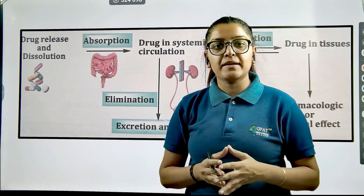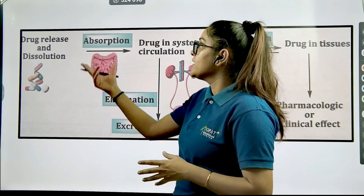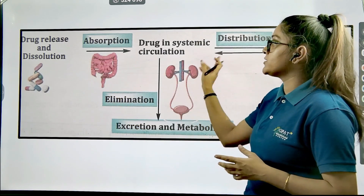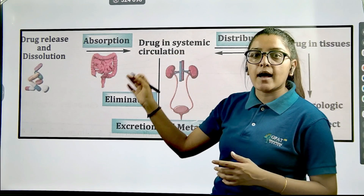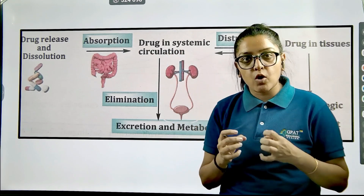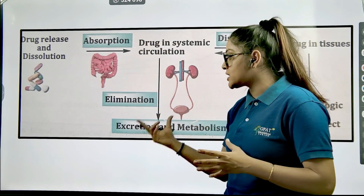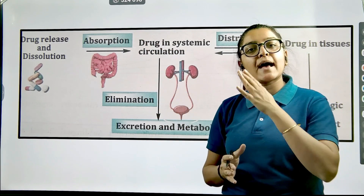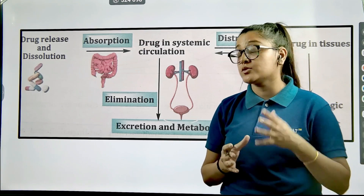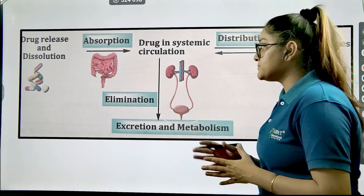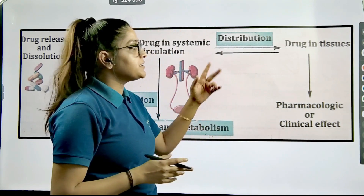The sequence that is going to happen will be: drug release, followed by dissolution, then absorption, followed by the drug reaching the systemic circulation. Now, if the drug is small in size and hydrophilic, there is a high chance it is going to get eliminated as soon as possible — excretion will be facilitated through the urine only.